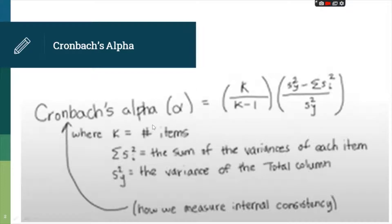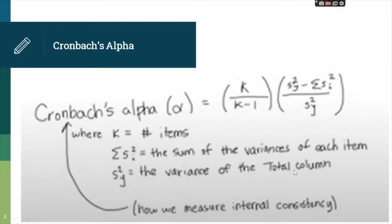K is the number of items provided. ΣS squared I is the sum of the variances of each item — we are going to use the formula of variance for the computation of Cronbach's alpha. S squared Y is the variance of the total column. Let's have a sample.